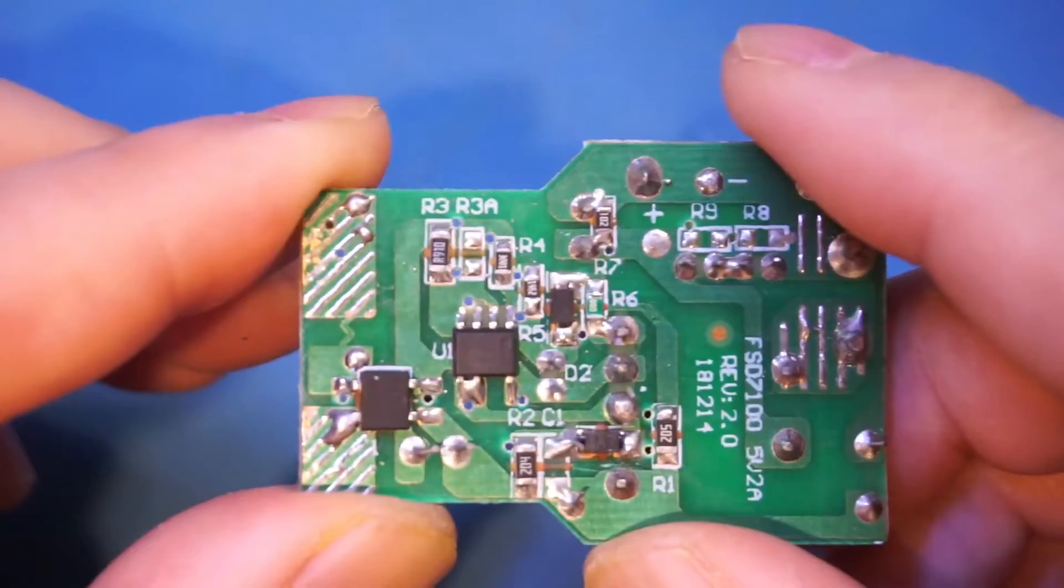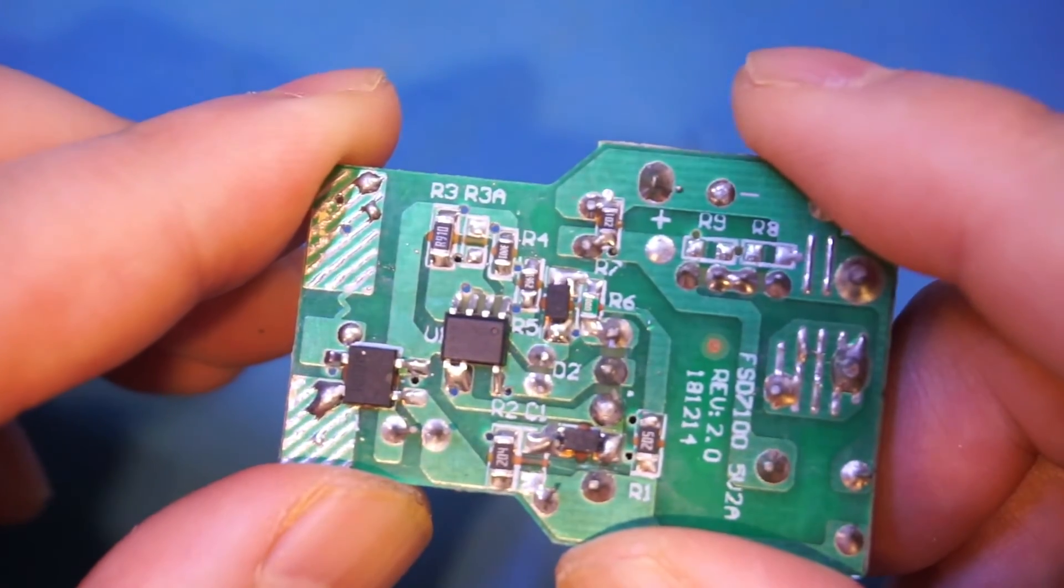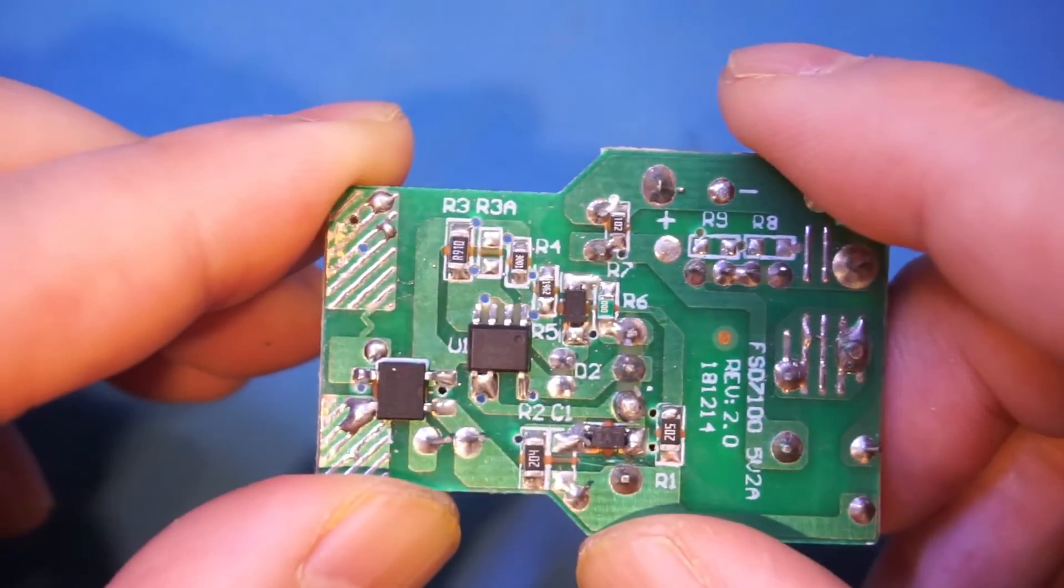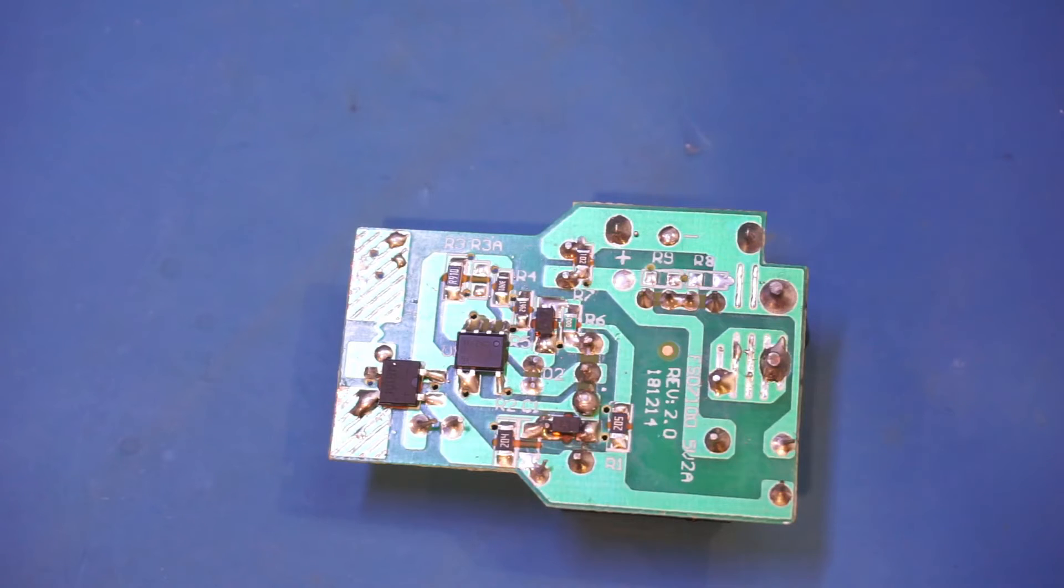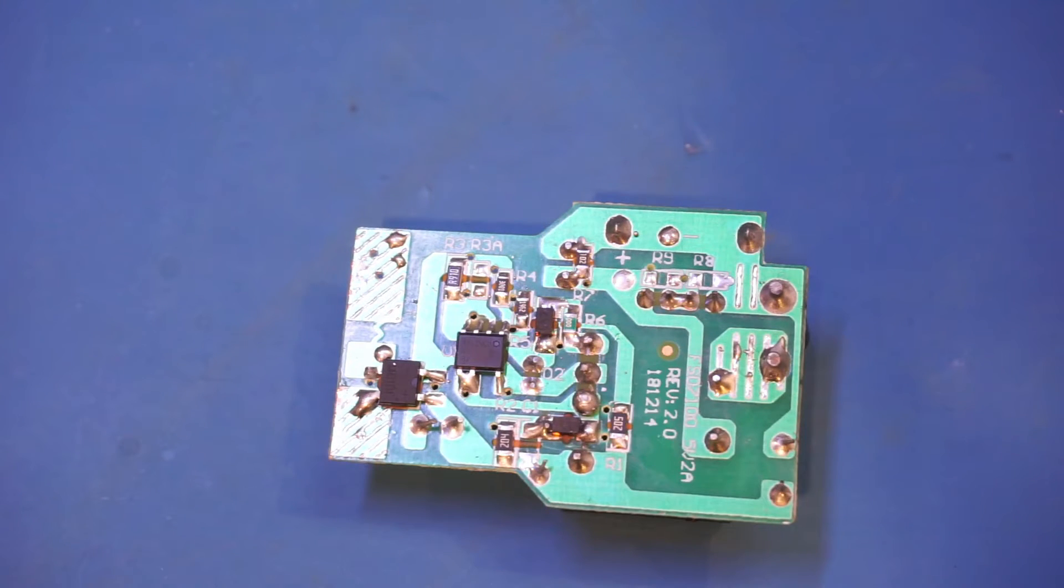I mean, I have seen PCB traces used as fuse before in some low-voltage applications, but for a high-voltage application like this, this is just asking for trouble. First of all, this is roughly a one millimeter trace, so I guess it takes a couple of amps for it to fuse. And that is simply too much current for this tiny adapter.